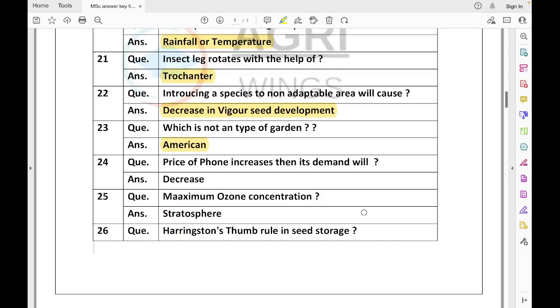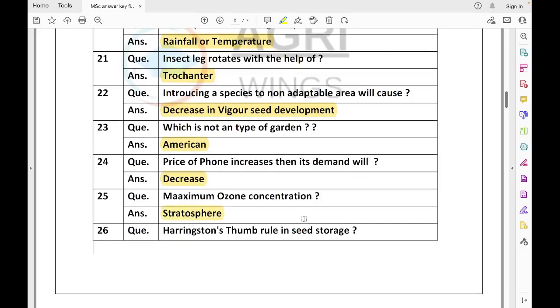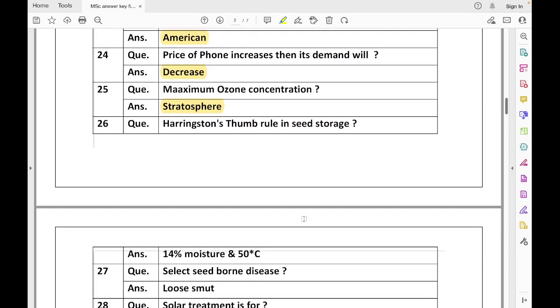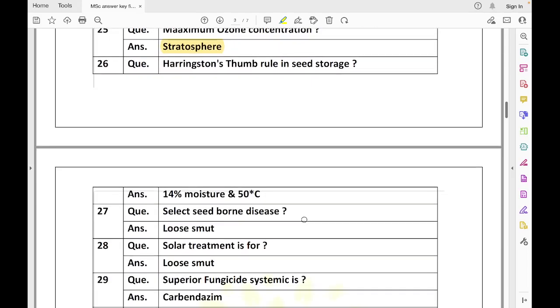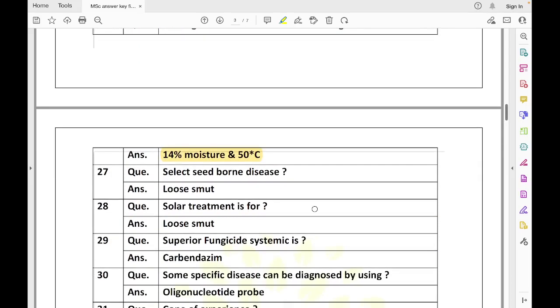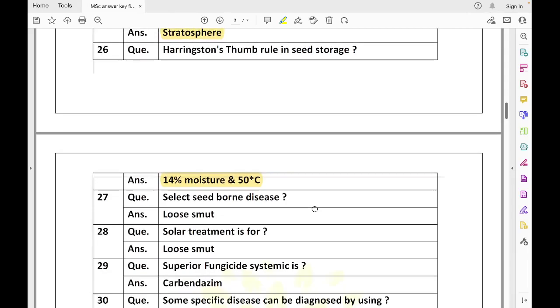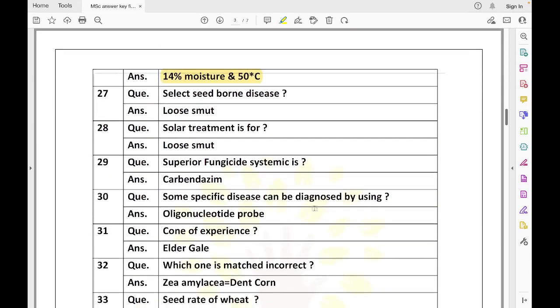Which is a noted type of garden? American garden was among the options along with French garden, English garden, and Japanese garden. If price of phone increases, then its demand will decrease - negative relation between demand and price. Maximum ozone is found at 25 km, that is in stratosphere. Harrington thumb rule in seed storage says 14% moisture and 50 degrees Celsius for storing seeds.